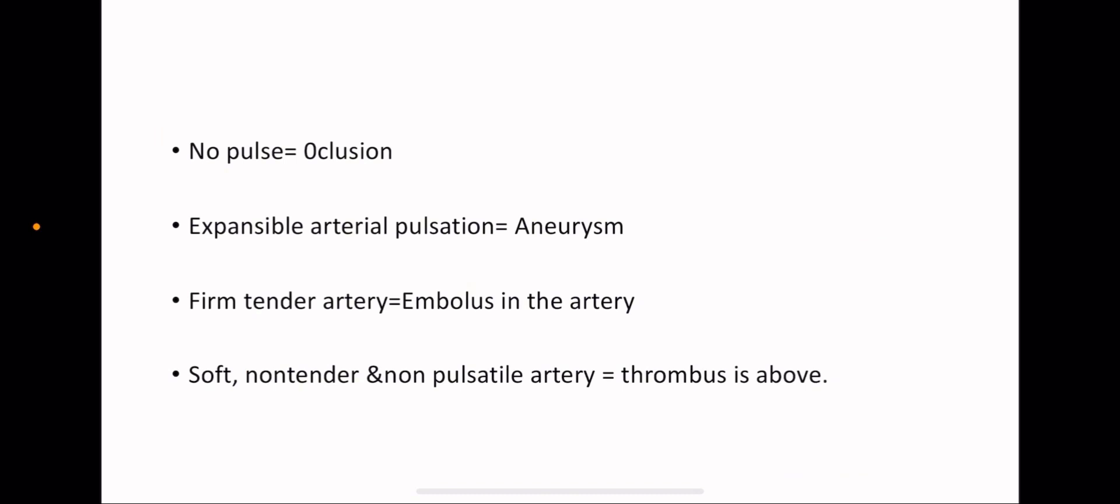And then you interpret your findings. If there is no pulse, this indicates occlusion. If there is expansile arterial pulsation, this indicates aneurysm. If there is firm tender artery, this may indicate thrombus in the artery. If it's soft, non-tender and non-pulsatile artery, this indicates thrombus above the area that you checked. And by doing this, you complete your vascular examination. Thank you and good luck.